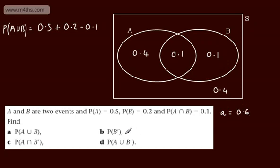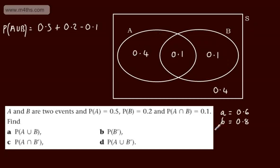For part B, we want the probability of not-B. Since the probability of B is 0.2, the probability of not-B, or B complement, is 0.8. For part C, we want the probability of A intersection not-B. Looking at the Venn diagram, A intersection not-B is the region in A but not in B — that's the A-only region, which gives us 0.4. The probability of A intersection not-B is 0.4.